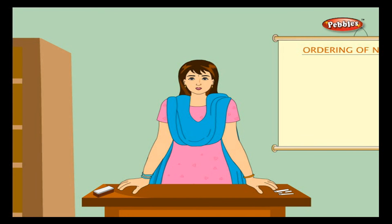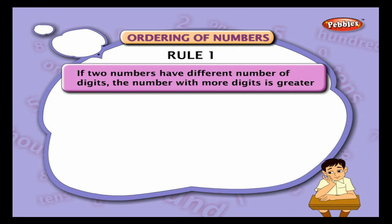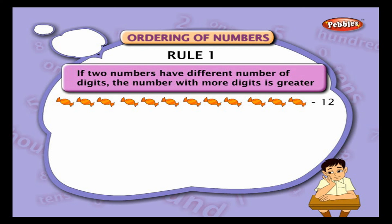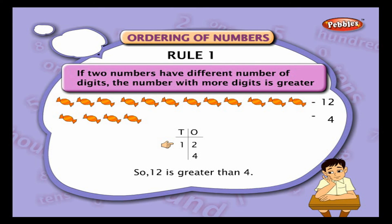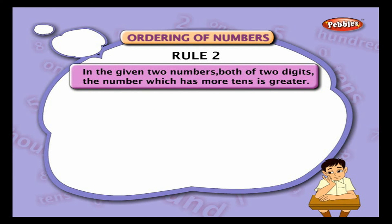Ordering of numbers: Rule 1 — if two numbers have a different number of digits, the number with more digits is greater. For example, 12 chocolates versus 4 chocolates: 12 has one ten and 4 has no tens, so 12 is greater than 4.